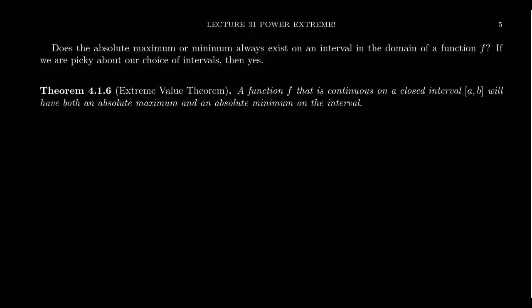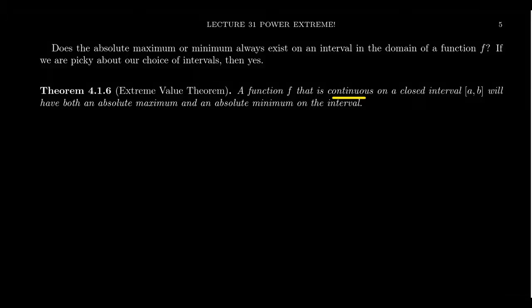We saw in a previous video that if a function has an absolute maximum or minimum, those values would be unique. But how do we know if they exist or not? The Extreme Value Theorem comes into play here and gives us conditions that guarantee the existence of absolute maximum or minimum values. The theorem guarantees the existence of absolute extrema: if a function f is continuous on the closed interval [a, b] — meaning the points a and b are included — then the function will have an absolute maximum and an absolute minimum on that interval.